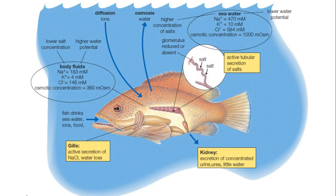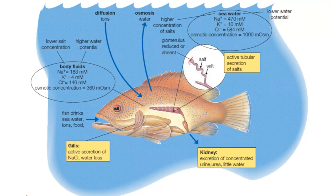Here we see the difference with marine fish. Marine fish actually lose a lot of water in order to maintain the balance of solutes both inside and outside of the fish. This means they must drink large amounts of water, but they need to retain it, so they excrete highly concentrated urine that contains very little water.